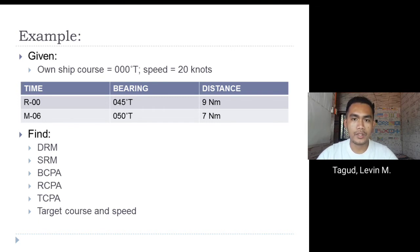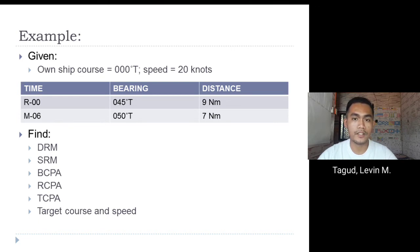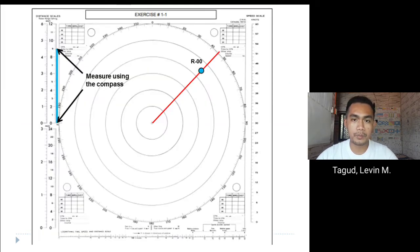In our example, our ship is traveling at 0 degrees true with a speed of 20 knots. The other vessel is first sighted at 45 degrees true with a distance of 9 nautical miles. After 6 minutes, the vessel has a bearing of 50 degrees true with a distance of 7 nautical miles. We need to find the DRM, SRM, BCPA, RCPA, TCPA, and the target's true course and speed.